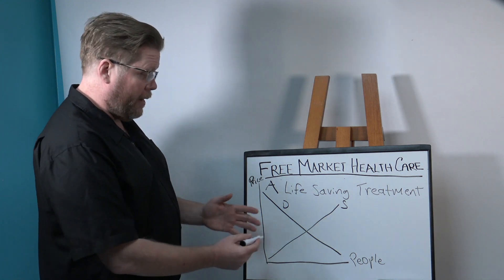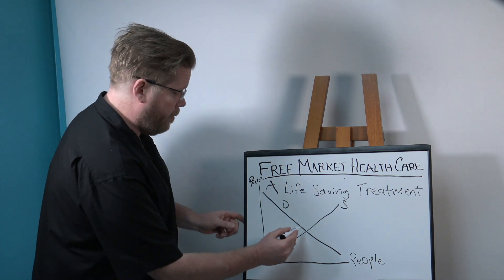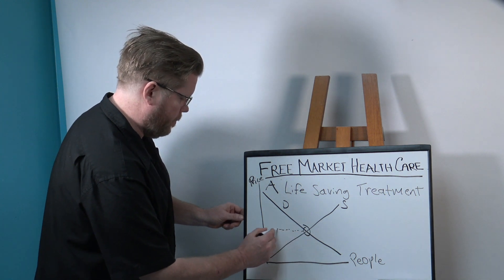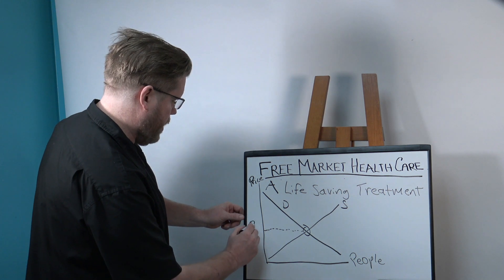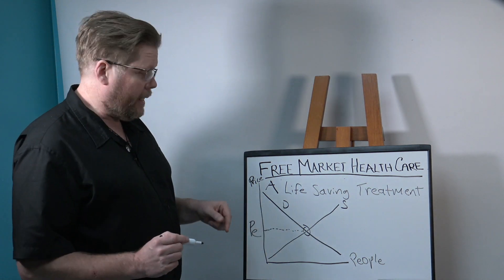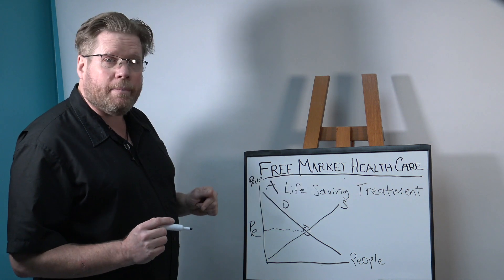So, we look at the intersection of these two lines and we get, right here, our equilibrium or market price. This is the price that the life-saving treatment will sell for.